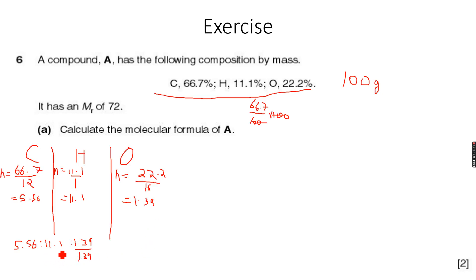The lowest number of moles is 1.39, so I am dividing all of them by 1.39. When we divide all of these by 1.39, the ratio that we get is 4 is to 8 is to 1.